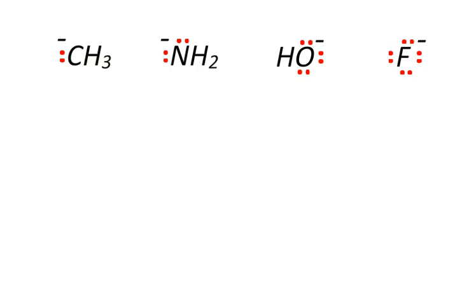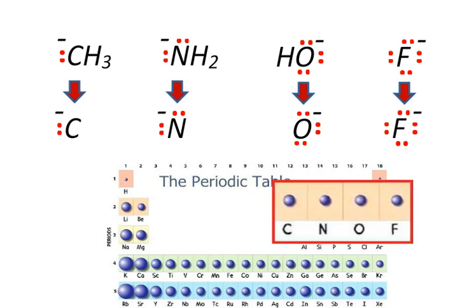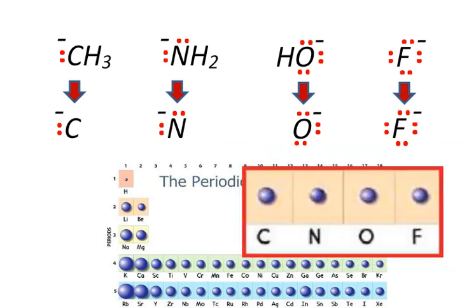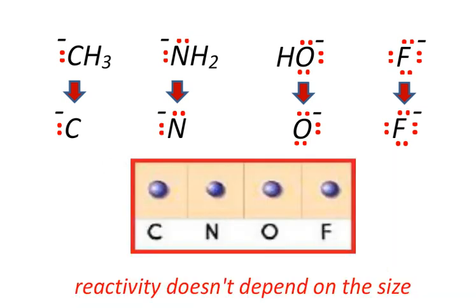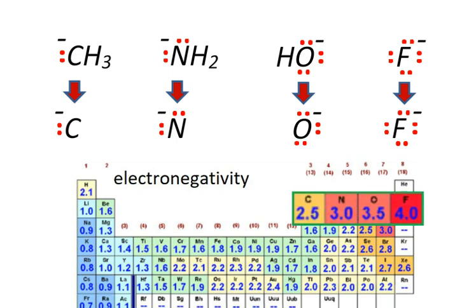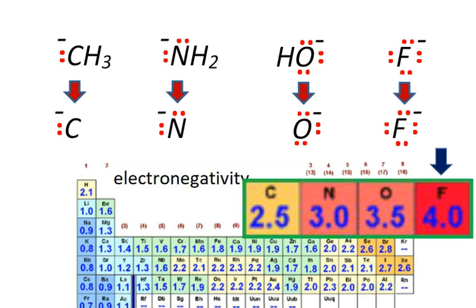Now, assuming that we have those four charged molecules, the third thing we have to remember is that the four reactive charged atoms belong to the same row of the periodic table and have almost the same atomic size, which means that the size has no effect on their reactivities. The only factor that changes between them is electronegativity. F is the most electronegative and C is the least electronegative.